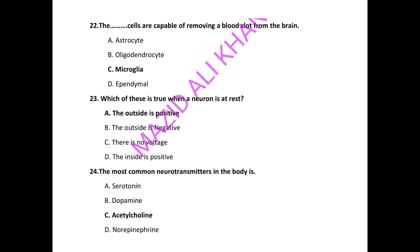Next: the blank cells are capable of removing a blood clot from the brain — microglia cells is the correct choice. Next question: which of these is true when a neuron is at rest? The outside is positive — that is the correct choice. Next: the most common neurotransmitter in the body is acetylcholine — that is the correct answer.